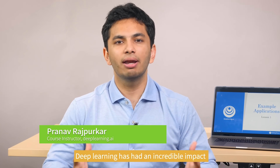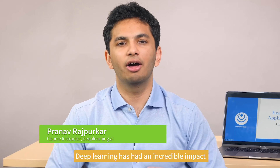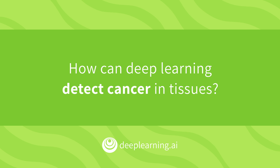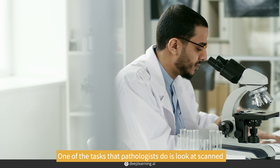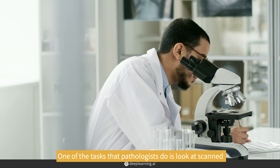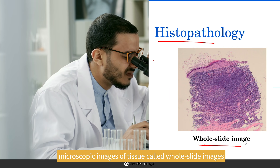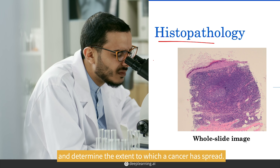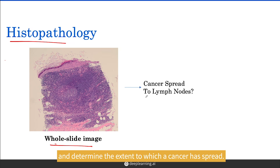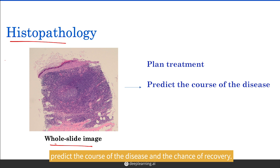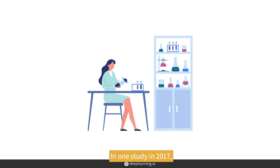Deep learning has had an incredible impact on medical imaging for diagnosis. One of the tasks that pathologists do is look at scanned microscopic images of tissue called whole slide images and determine the extent to which a cancer has spread. This is important to help plan treatment, predict the course of the disease, and the chance of recovery.